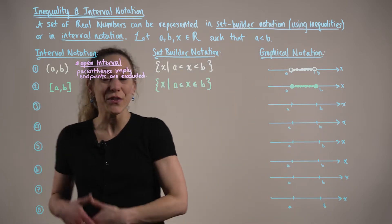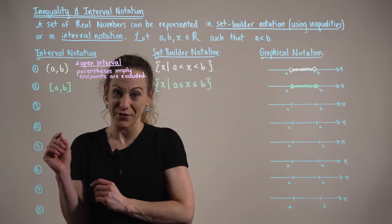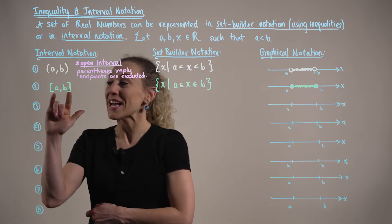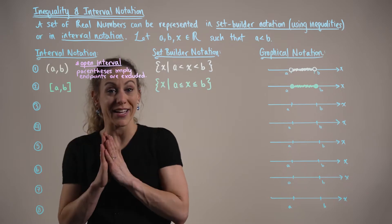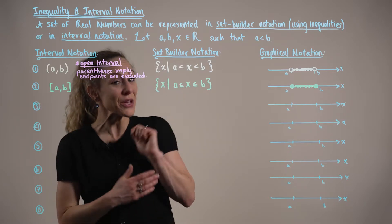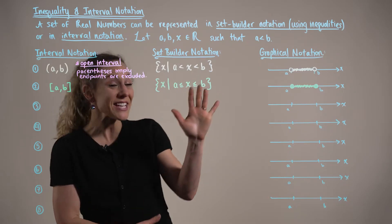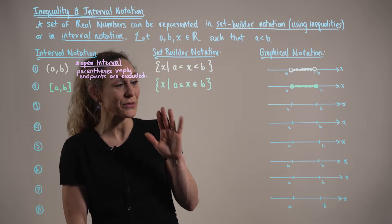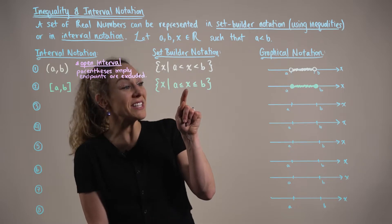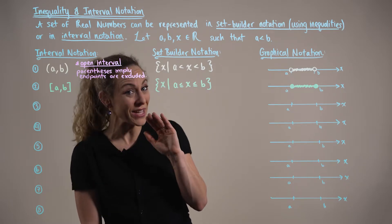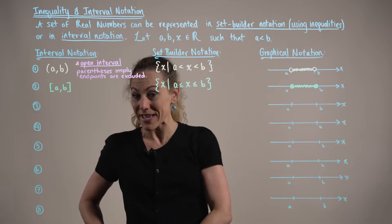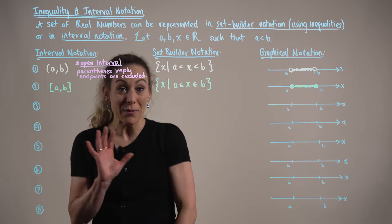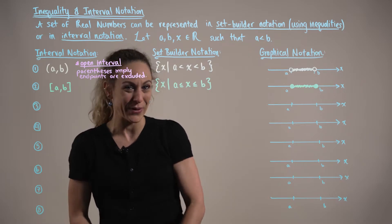Our next interval is what we call a closed interval. Notice the difference from case one: here we have square brackets, implying that x can equal these endpoints. In set builder notation, we have the set of all real numbers x such that x is greater than or equal to a and less than or equal to b. So square brackets in a closed interval imply that x can equal the endpoints.